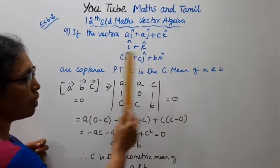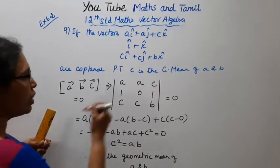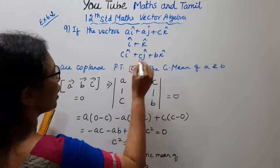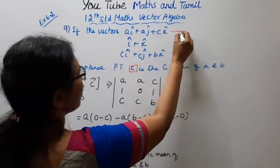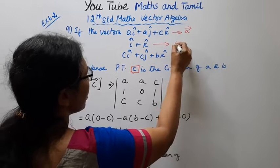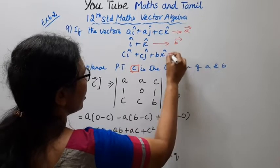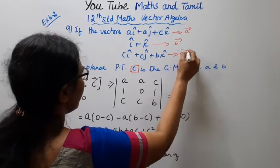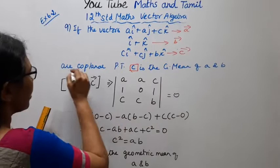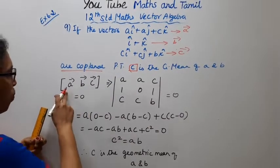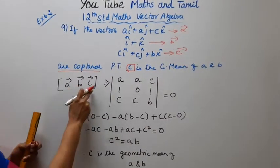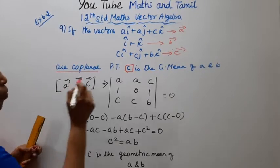The geometric mean of a and b is c — we can prove that. This is vector a, vector b, vector c. These three vectors are coplanar. For coplanar vectors, the box product — a vector, b vector, c vector — is equal to 0.